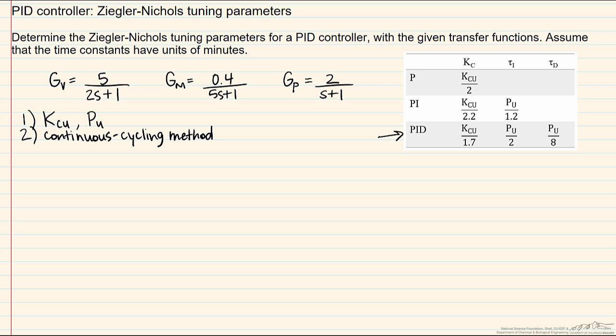Recall that direct substitution involves an analysis of the characteristic equation, which is one plus the open loop gain, which equals zero. So with the characteristic equation we will have one plus gv, gm, gp, and the controller. We will substitute those transfer functions into our characteristic equation.